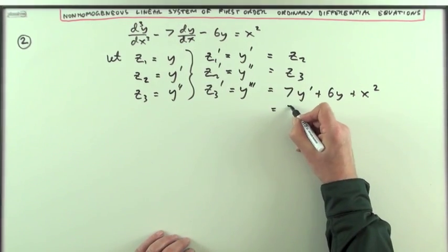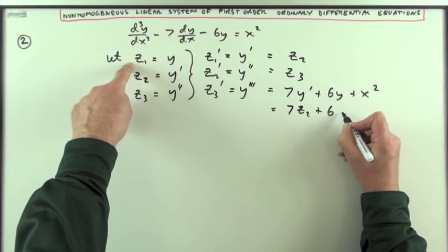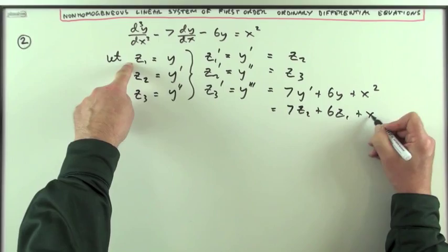which is 7, now y dashed is z2, 6y, which is 6z1 plus x squared.